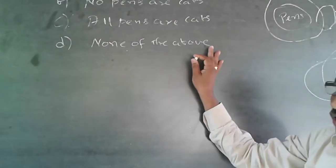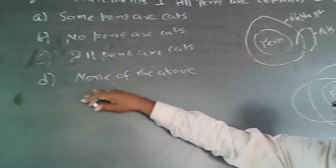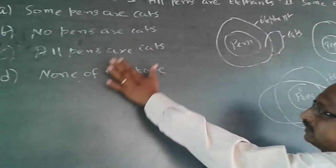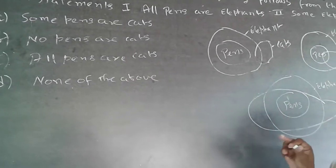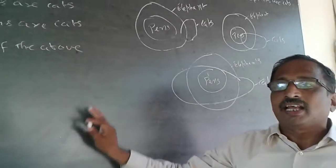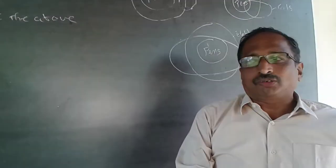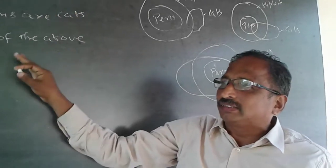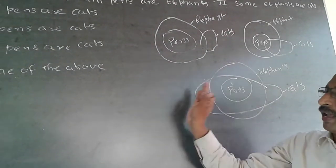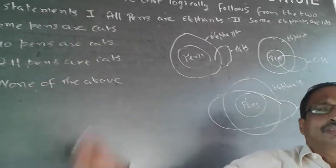But the option given is none of the above. This question has come in a NET exam and I'm taking it as such, but I don't personally go with the answer 'none of the above.' The answer should be either one of the three options — some pens are cats, no pens are cats, or all pens are cats. However, the book answer is given as none of the above, because the book's definition does not confirm any single one definitively. So as far as this question is concerned, even though logically my answer is any one of these, you will have to go with none of the above.